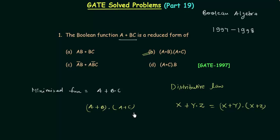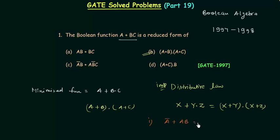We used the distributive law to minimize the original function, obtaining a OR (b AND c). This is a very important law and there are some shortcuts we can obtain from it. The first shortcut is: a complement OR (a AND b) can be directly written as a complement OR b — we can neglect the a.